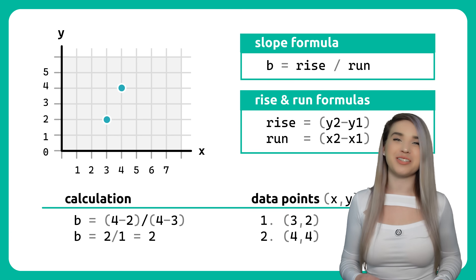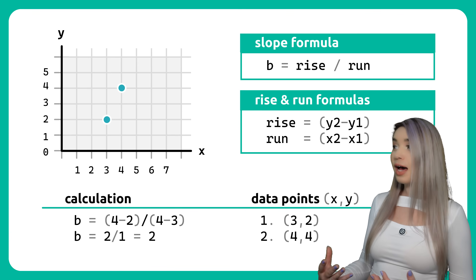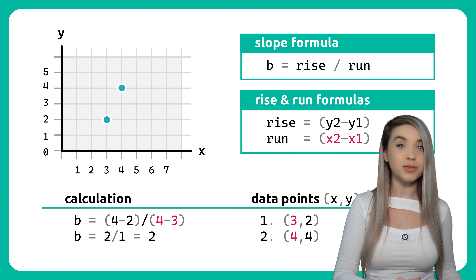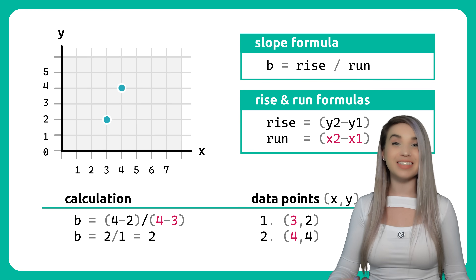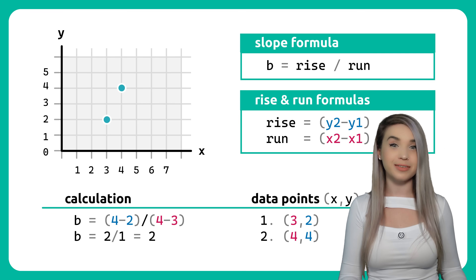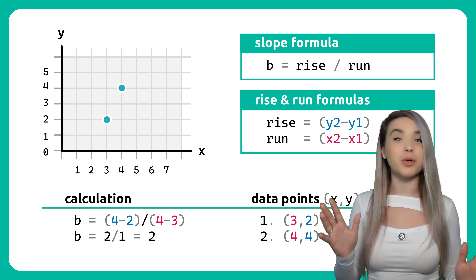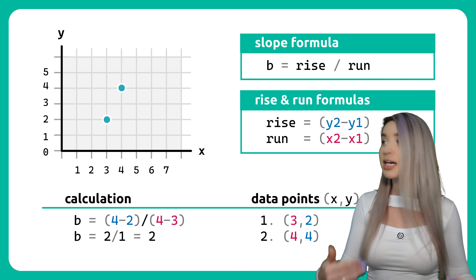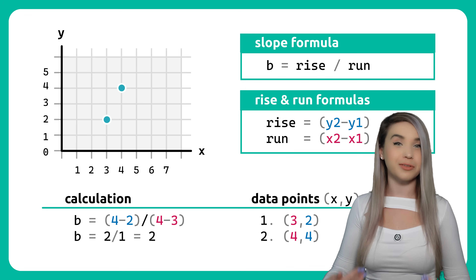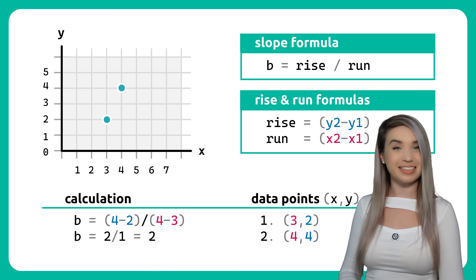In mathematical terms, we can also calculate the run by subtracting x1 from x2, and we can calculate the rise by subtracting y1 from y2. And while drawing the steps is definitely more fun, it is much easier to translate a mathematical formula into code. That's why we use the second method instead.